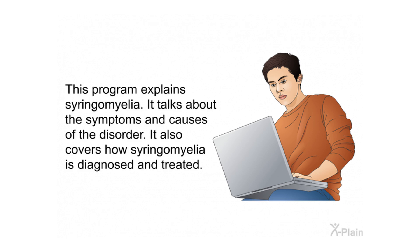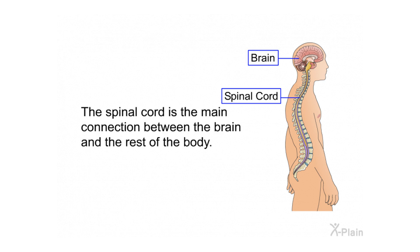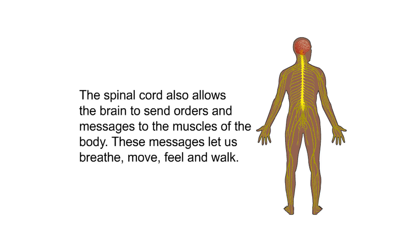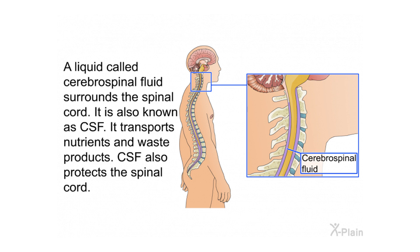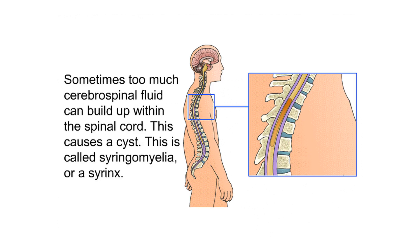The spinal cord is the main connection between the brain and the rest of the body. It allows the brain to send orders and messages to the muscles, letting us breathe, move, feel, and walk. A liquid known as cerebrospinal fluid, or CSF, surrounds the spinal cord. It transports nutrients and waste products and also protects the spinal cord.